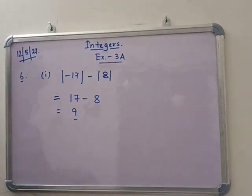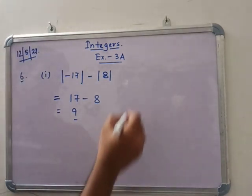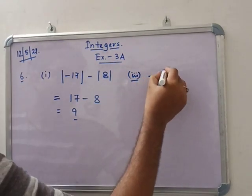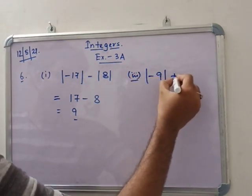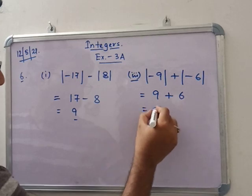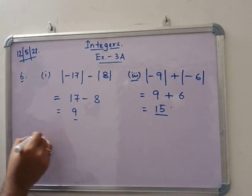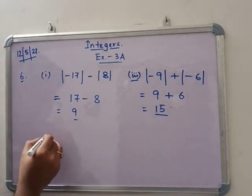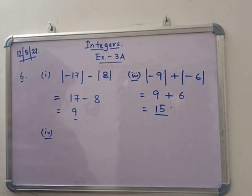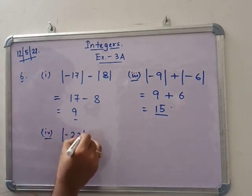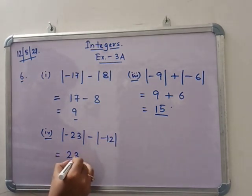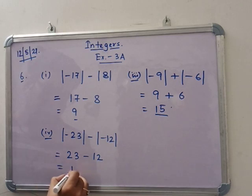Next is number 3. In number 3, you see that minus 9 absolute value plus minus 6 absolute value. So that means 9 plus 6, that means 15. Next one, number 4. In number 4, see that minus 23 minus minus 12. That means 23 minus 12, that means 11.